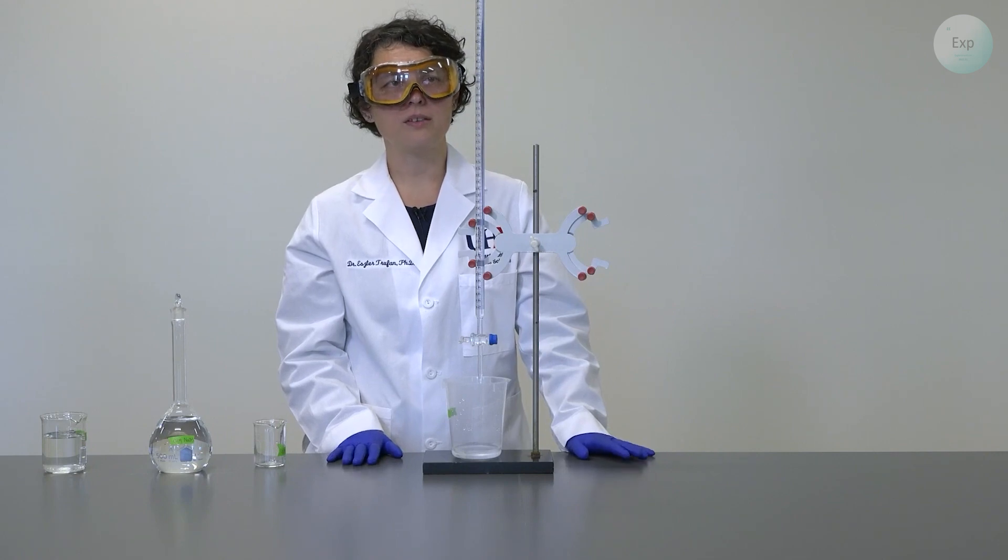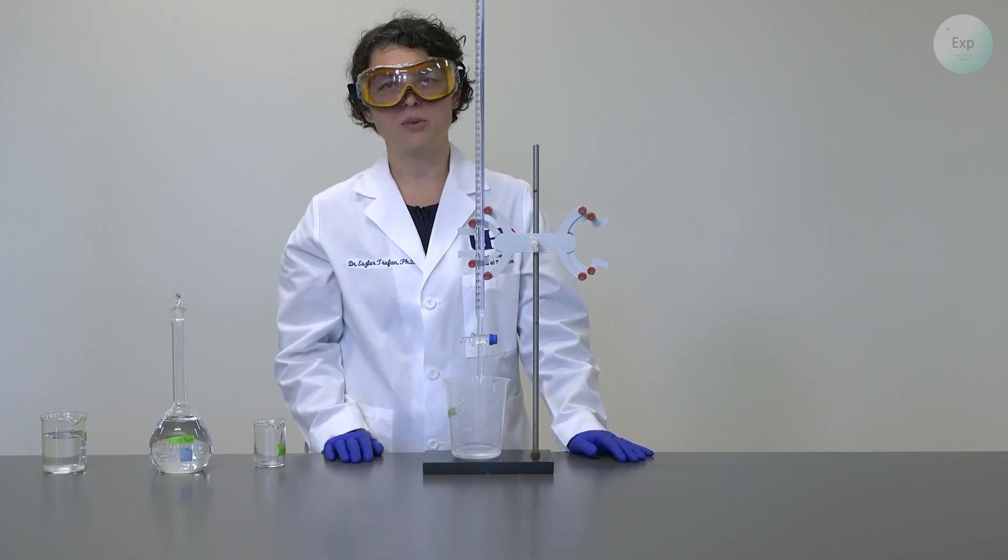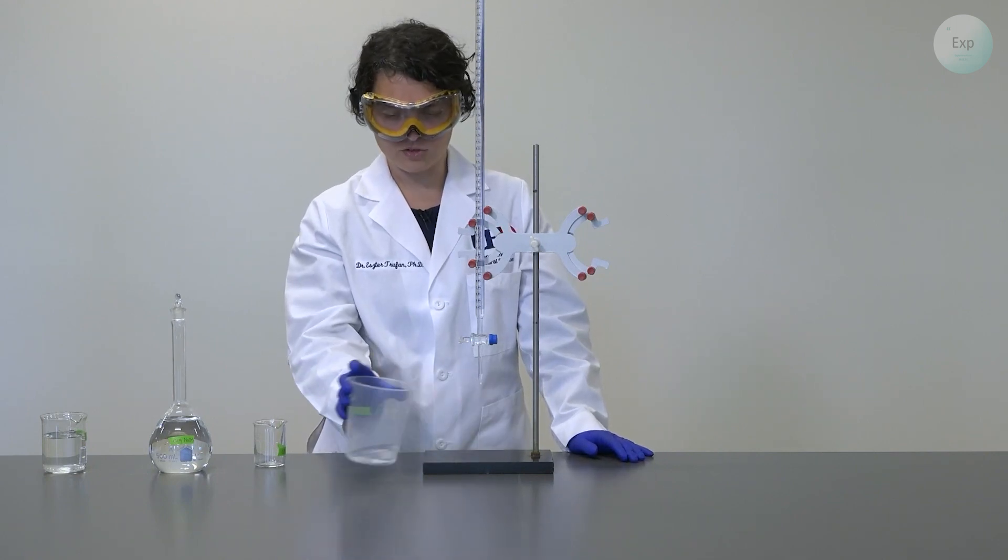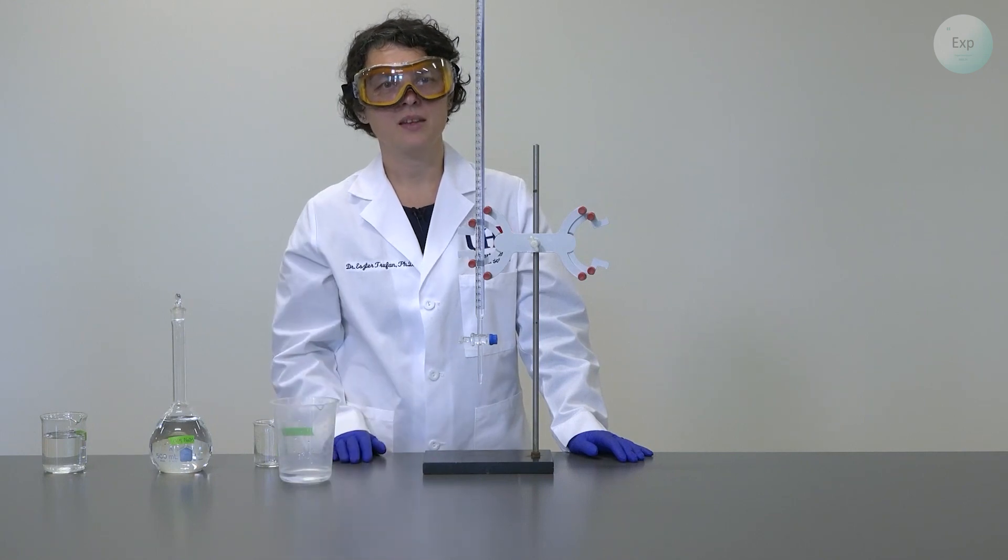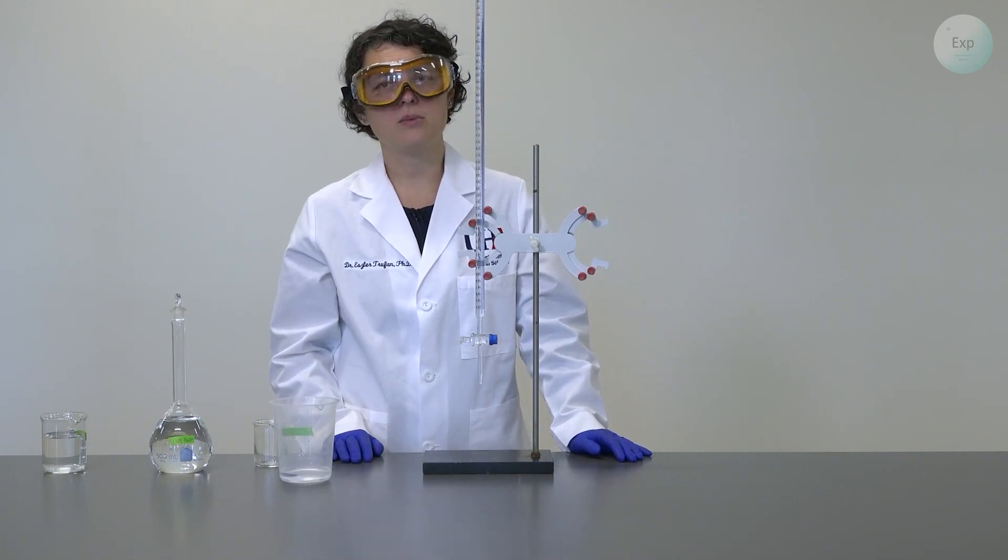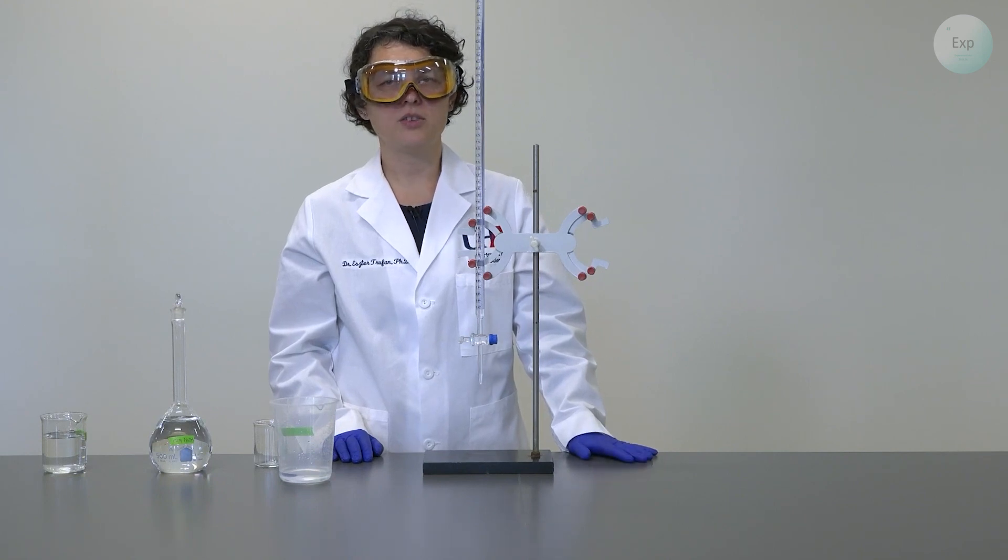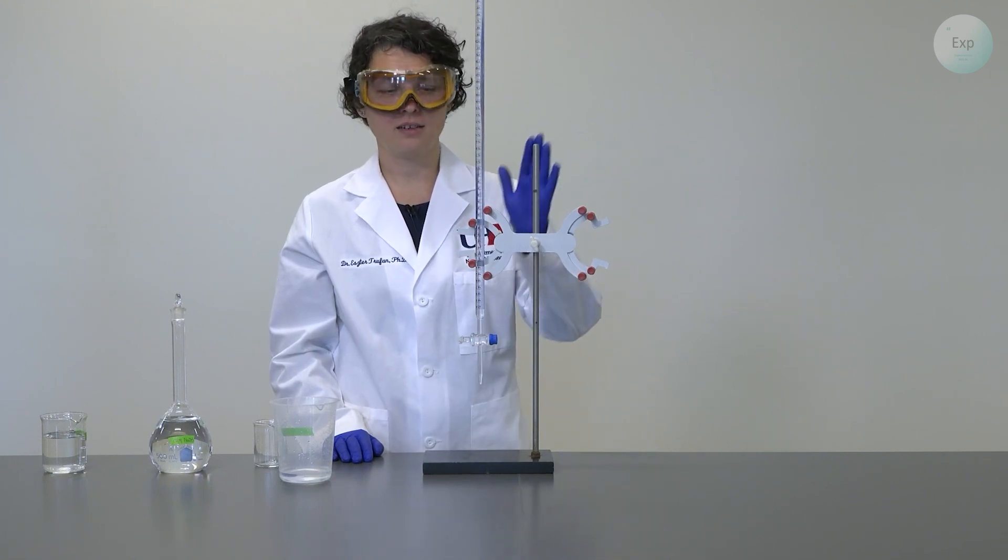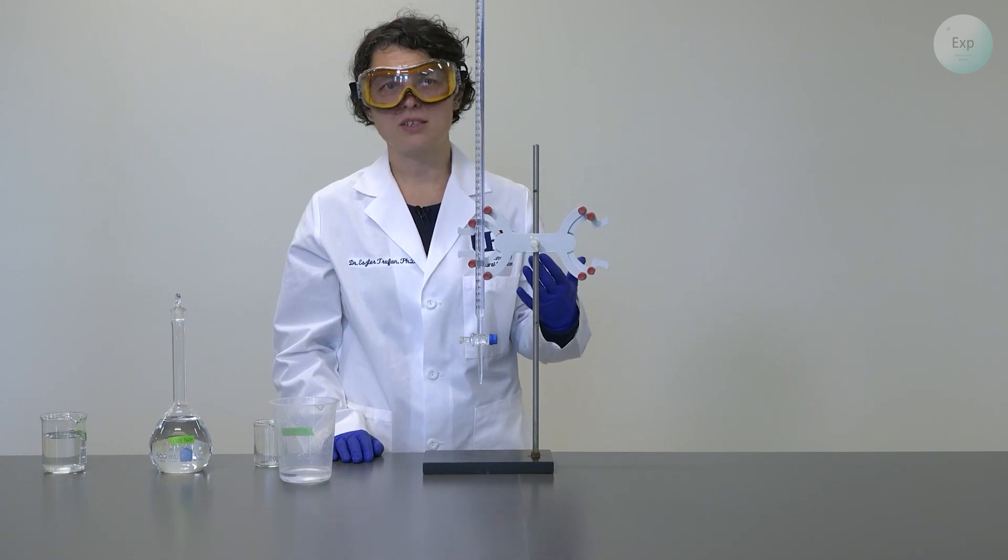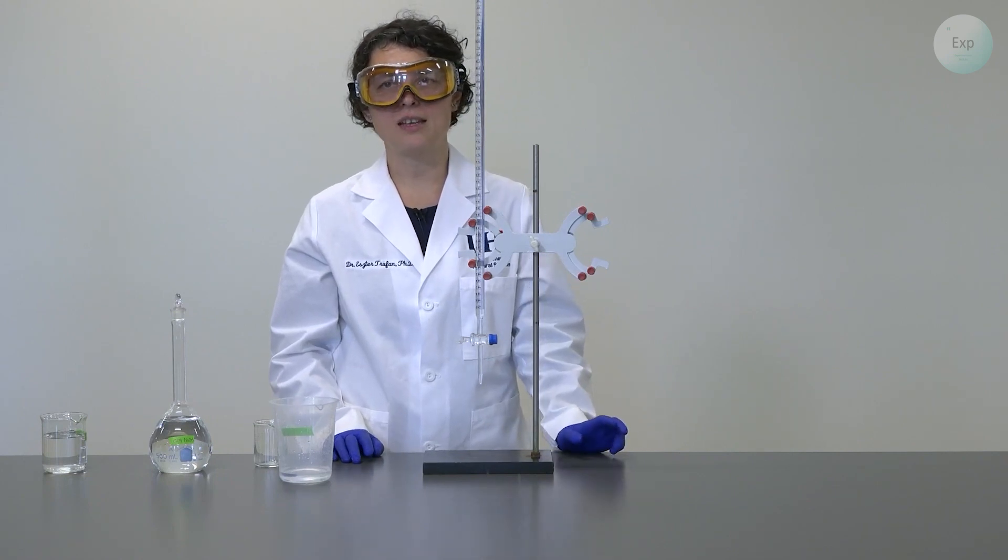At that point, our top volume on the burette should be below the zero mark. And now when we are ready to begin our titration, we need to record the volume of the solution that is inside the burette. Now, mind you, this is not an exact volume. We will call it a starting volume.